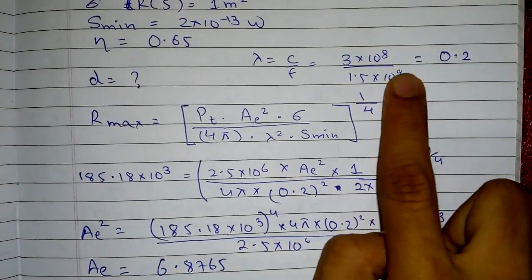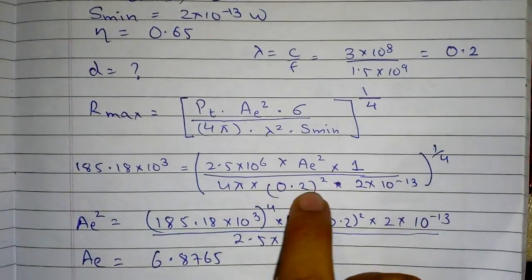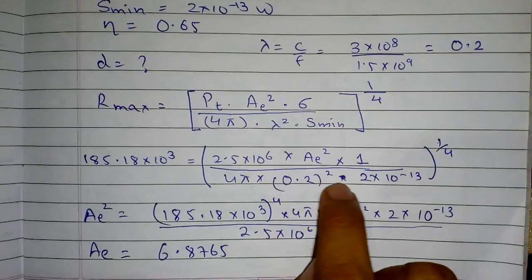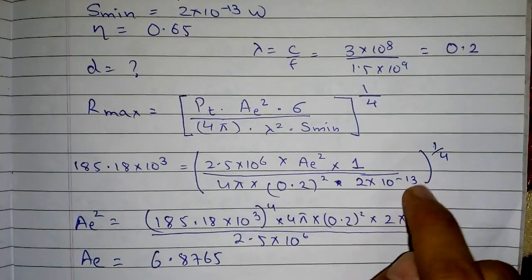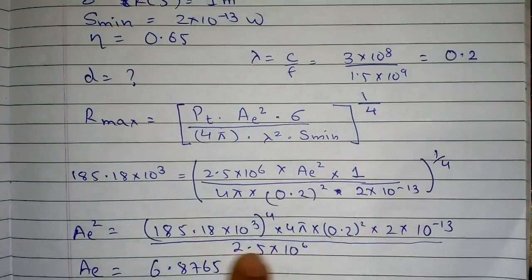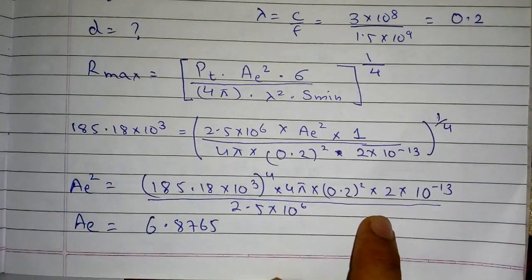Which is the lambda which we have calculated here that is being substituted, so 0.2 squared times 2×10^-13. When we put these values in calculator we get AE equal to 6.8765.